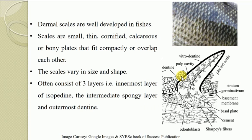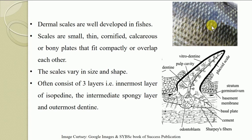Dermal scales originate from the mesenchyme and are well developed among fishes. These dermal scales originate from the mesenchyme area. The dermal scales found in fishes are small, thin, cornified, calcareous or bony plates that fit compactly and overlap each other. As you can see in this diagram, the scales are small and thin, compactly arranged on the skin, overlapping with neighboring or adjacent scales.